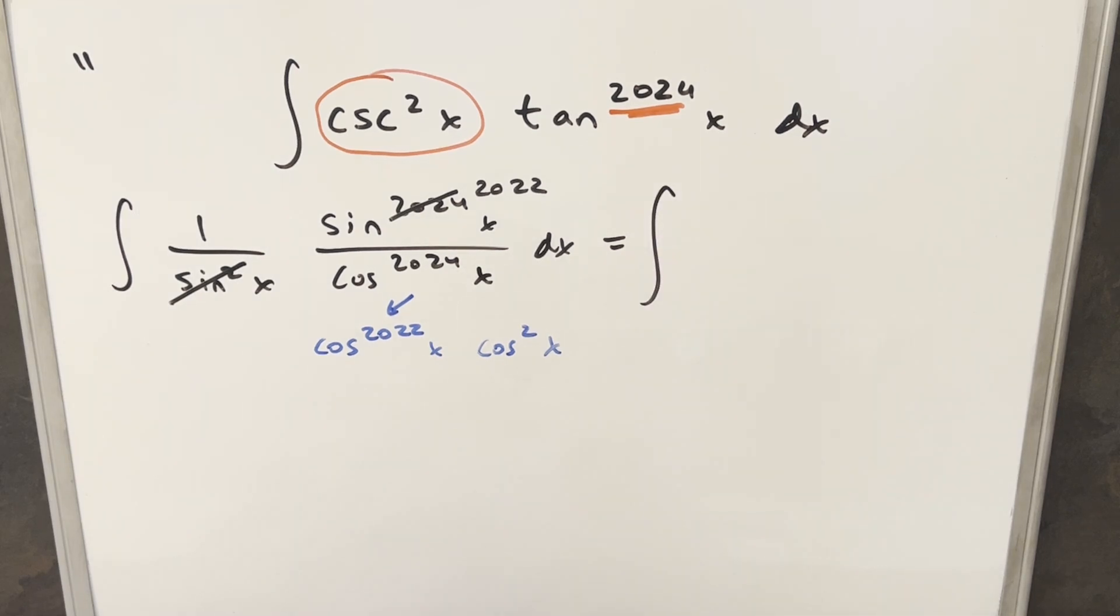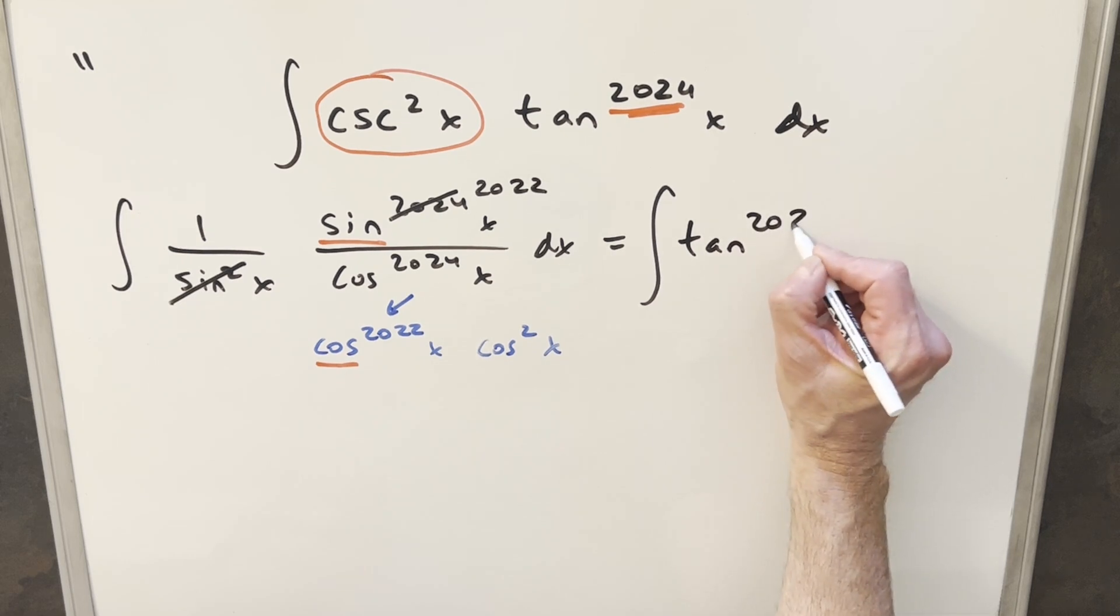So when we do the rewrite, let's just set this up. So we're going to have sine 2022, and here we have cosine 2022. Putting those together, we're going to end up with just tan 2022 x.